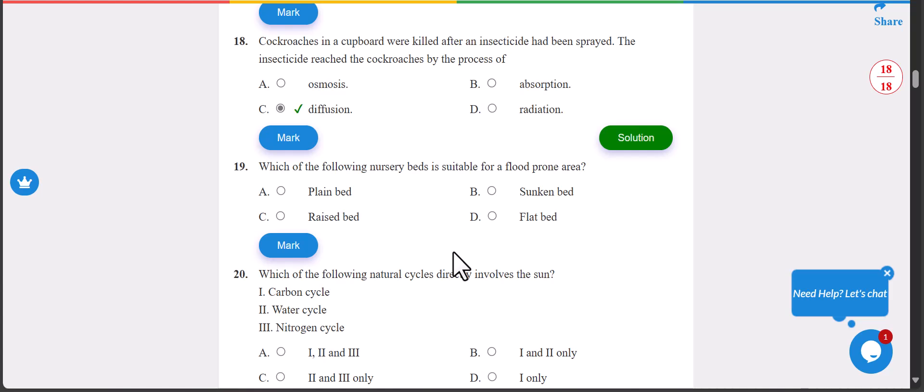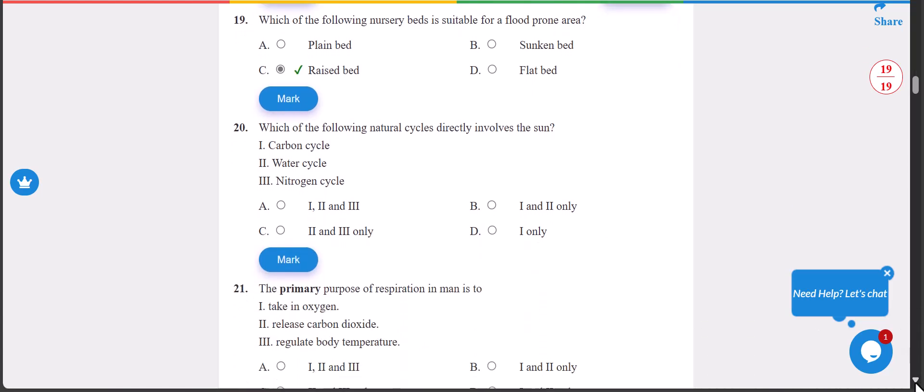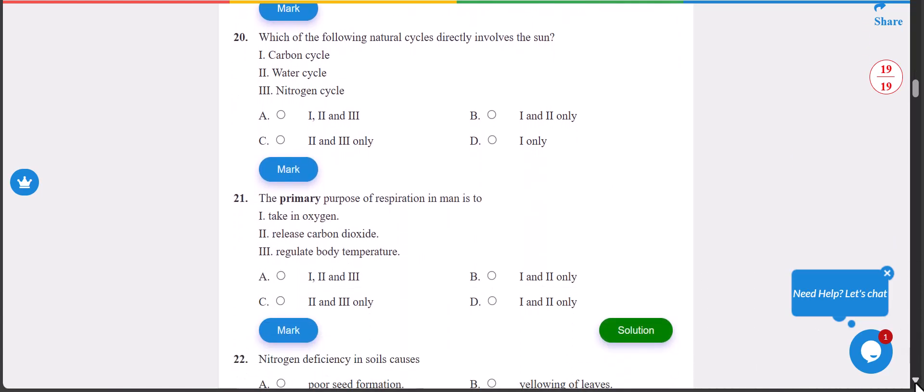Number 19: which of the following nursery beds is suitable for a flat prone area? The answer is C, raised bed.